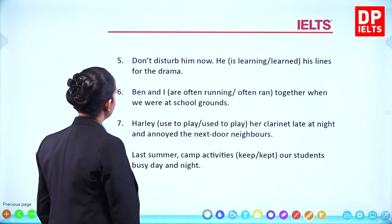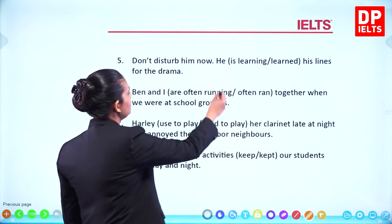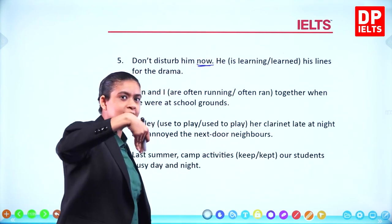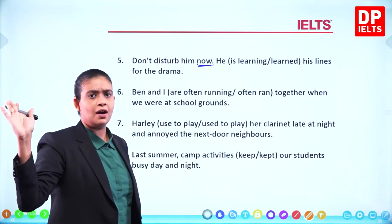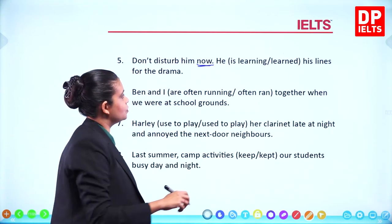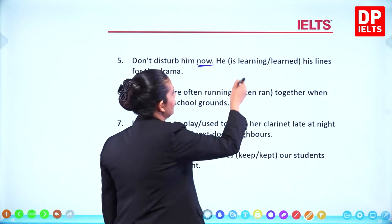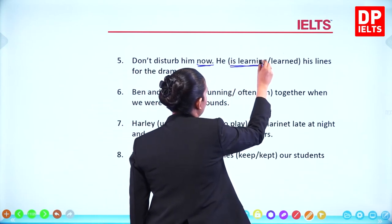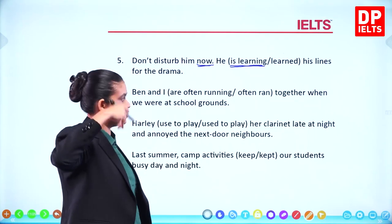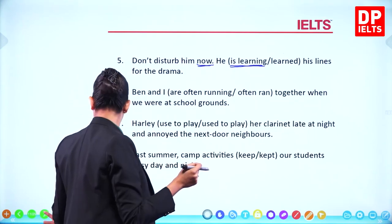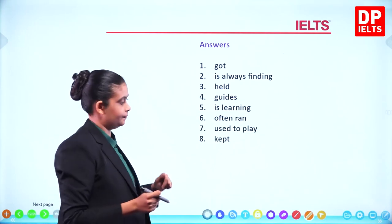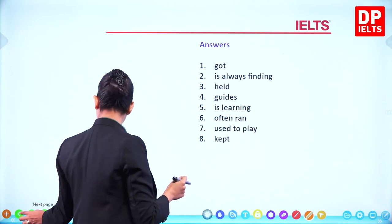'Don't disturb him now.' 'Now' means present, so it cannot be the past. He is learning his lines — it is happening at the time of speaking. So the answer is 'is learning.'